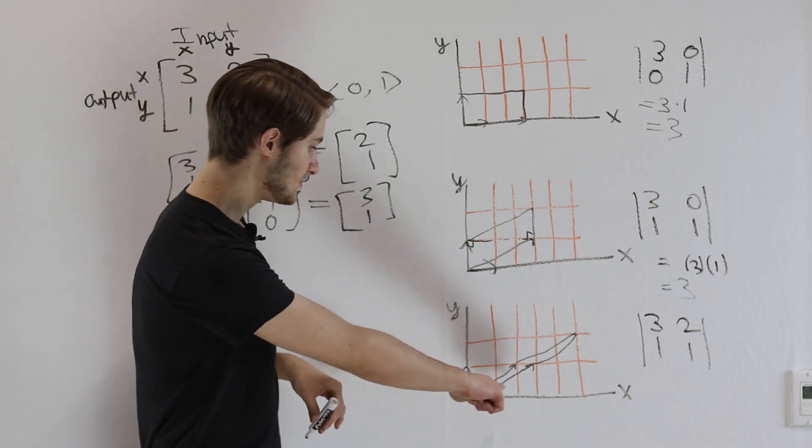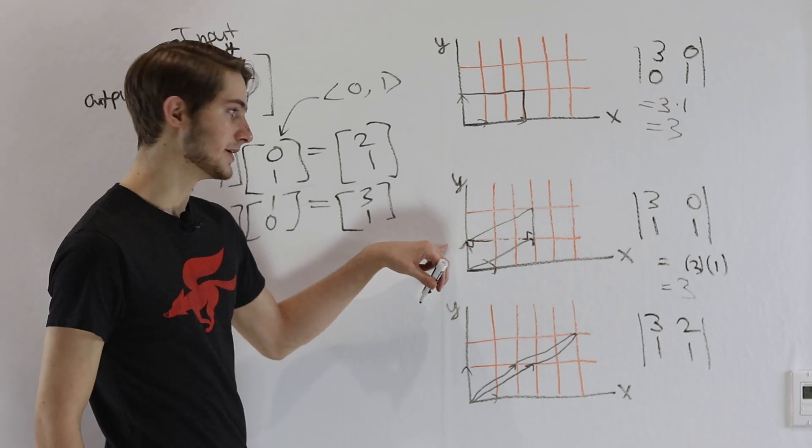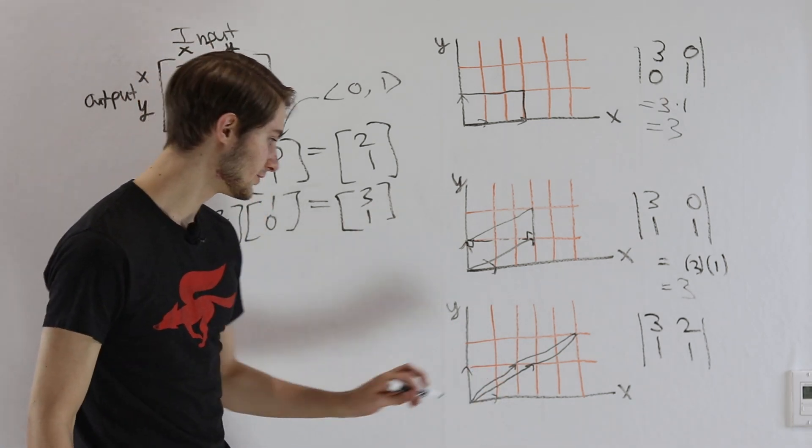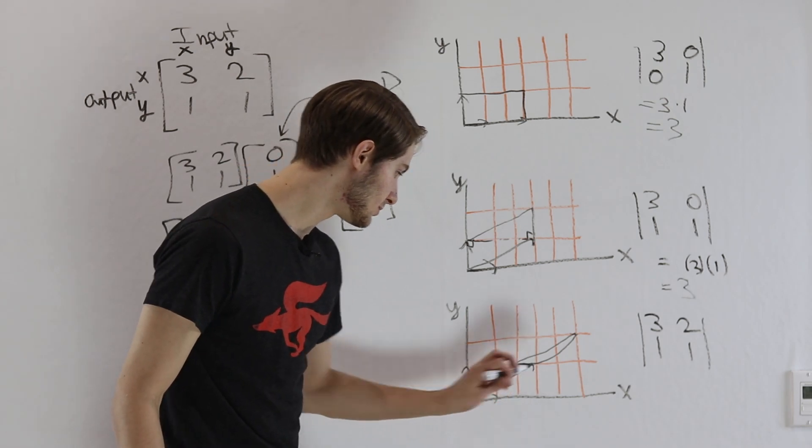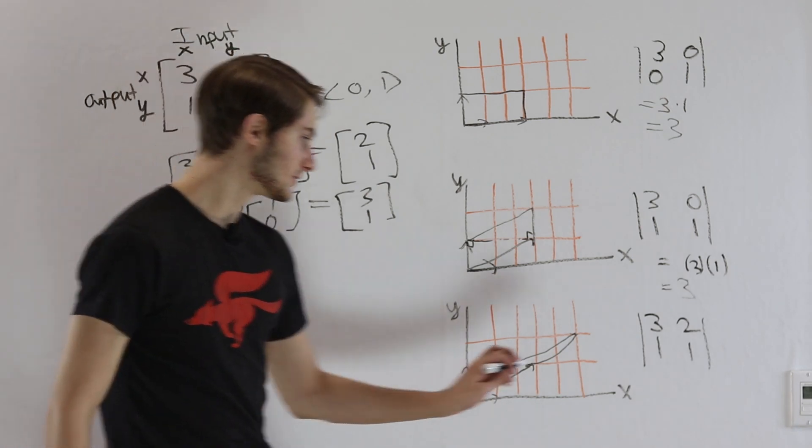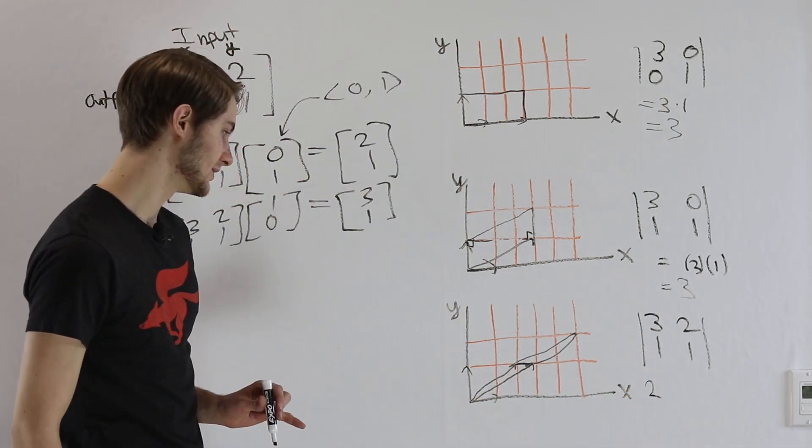Well, we have our parallelogram, let's try to think about the same thing that we did here. We want to split this parallelogram into the area of two triangles, and we can do that at this point right here. Just like before, the two triangles are going to be the same. So we're going to have two times the area of whatever this triangle here is.